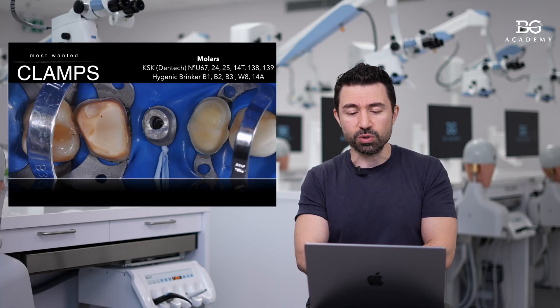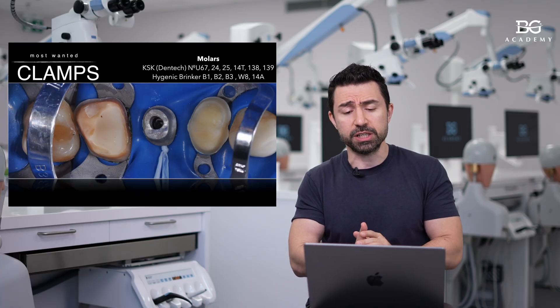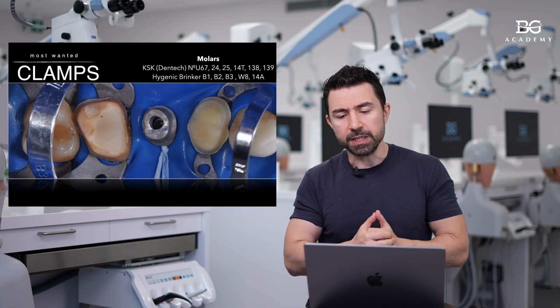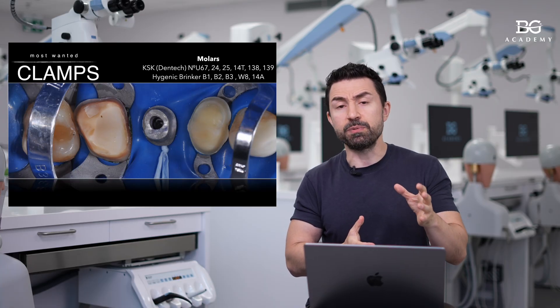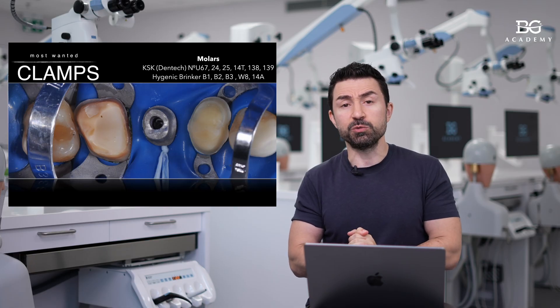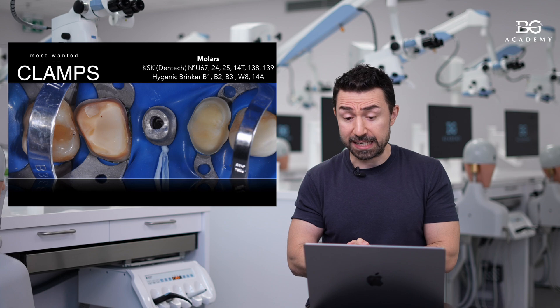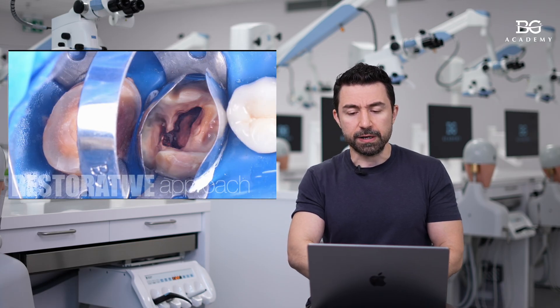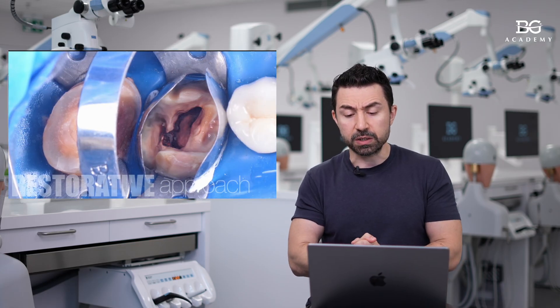Some tips and tricks related to clamps used in such cases: I would advise you to get hygienic clamps — B1, B2, B3 — active ones that will help you achieve better isolation. If you have favorite clamps for deep caries scenarios, please share them in the comments. Here we have extra isolation with a Brinker clamp, as you can see.